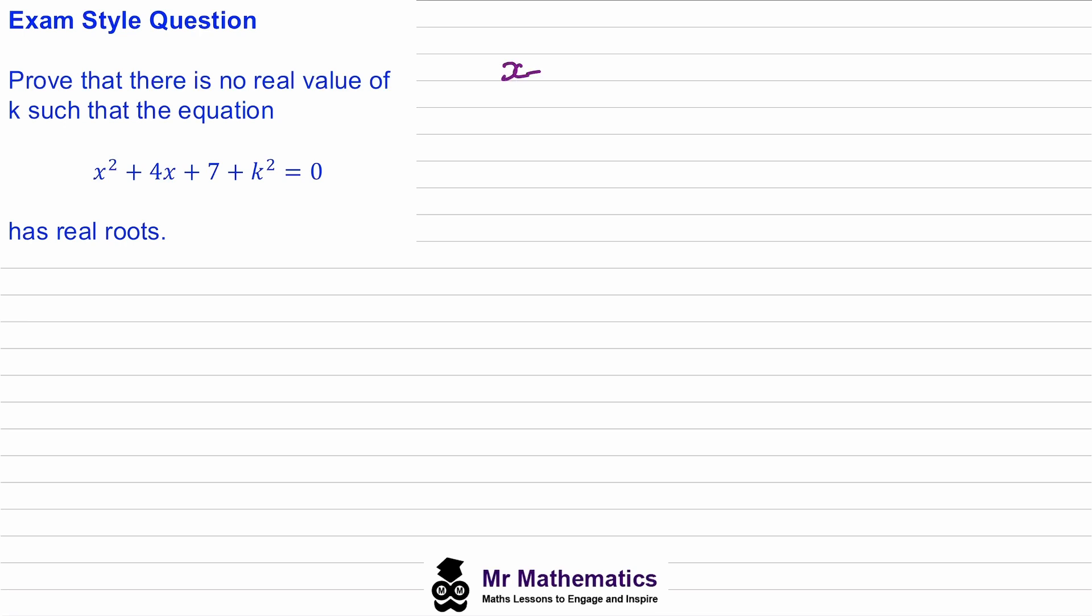So we have (x + 2)², we'll take away 4 to complete the square, we'll add in the 7 and the k², and this will be equal to 0. We can tidy up this left hand side so we've got (x + 2)² + 3 + k².